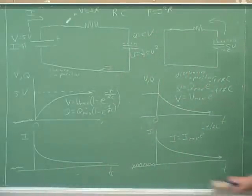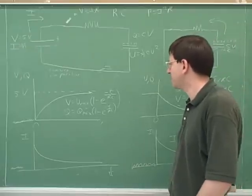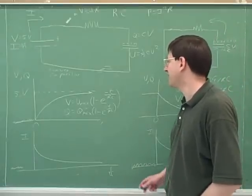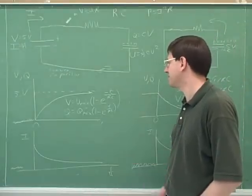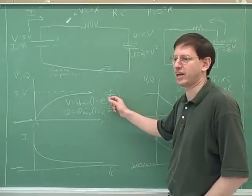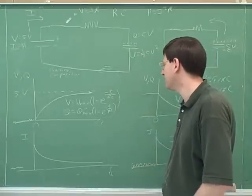There are other things we might talk about. For example, we haven't talked about the time constant, but we have limited time. The time constant, just for the record, is R times C. If you had to calculate the time constant, this is R times C.